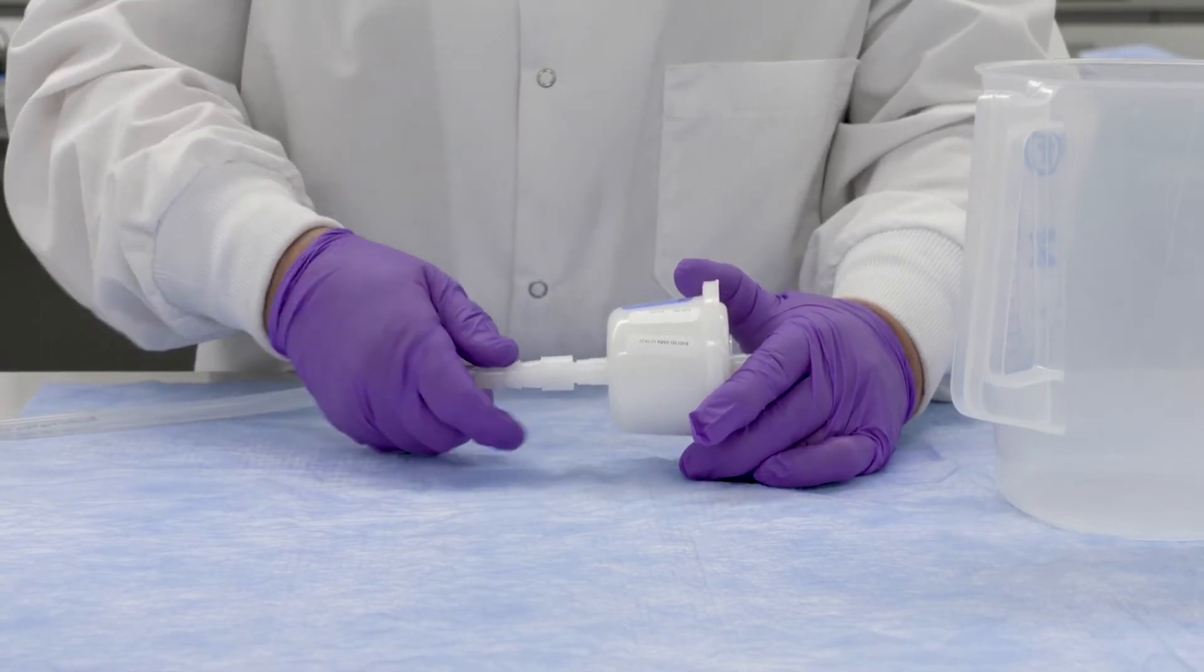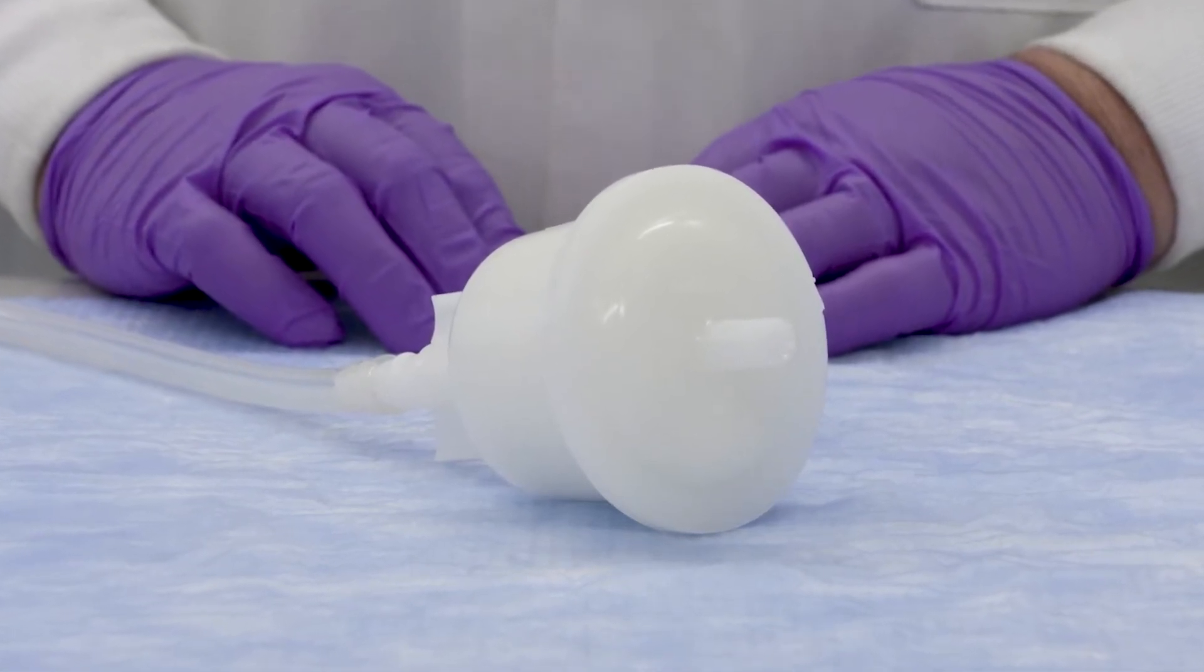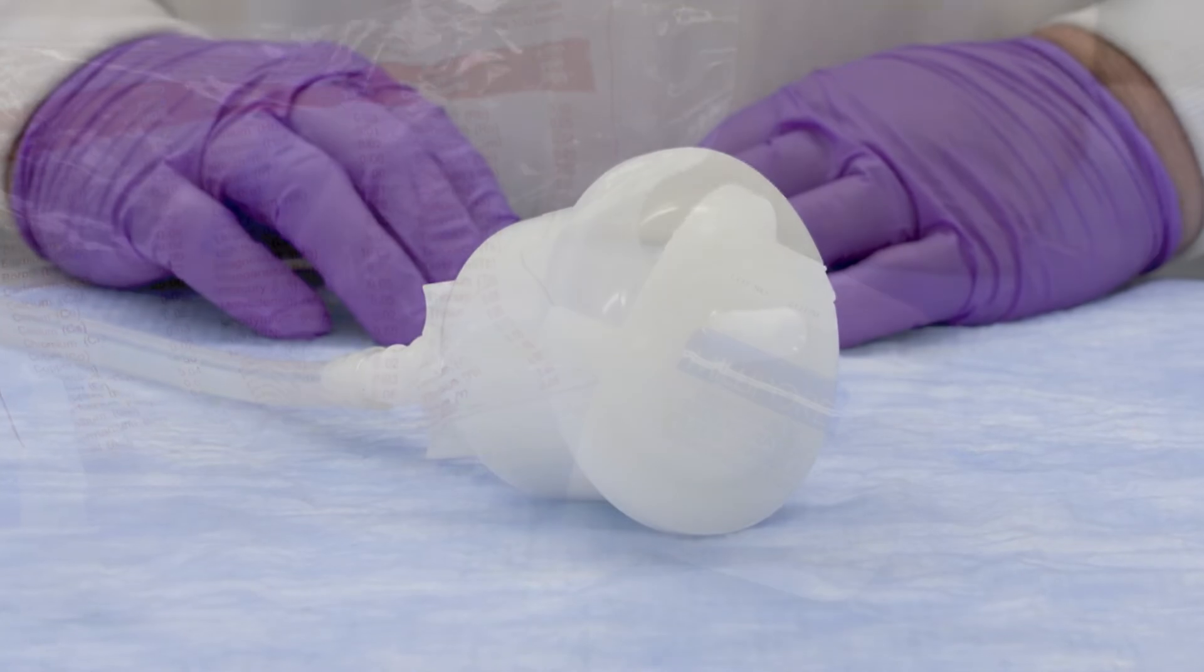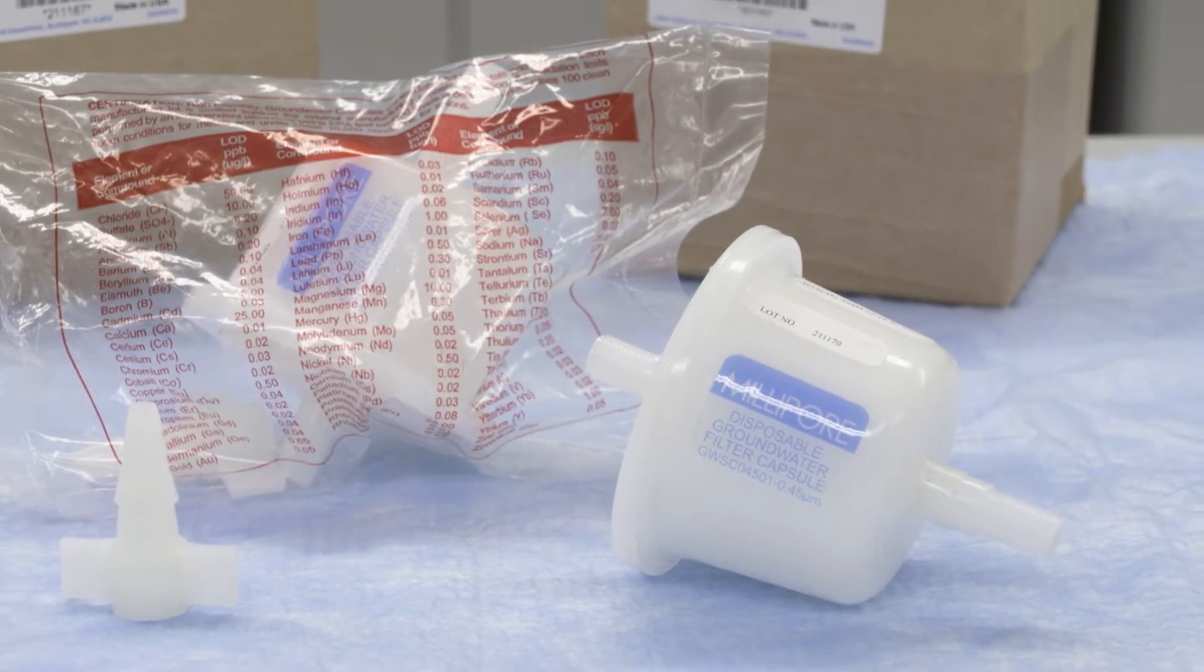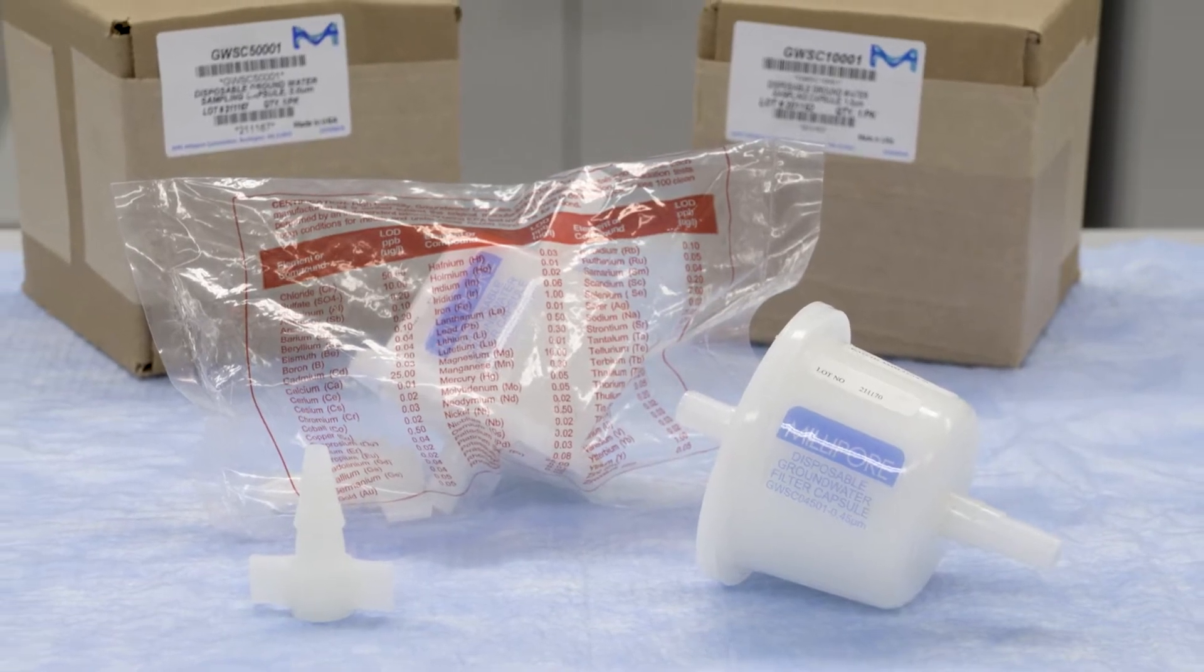The sampling capsules contain a filter or membrane that is sealed into a low extractable high-density polyethylene housing. Three pore sizes of hydrophilic non-woven supported polyethersulfone PES membrane are available.